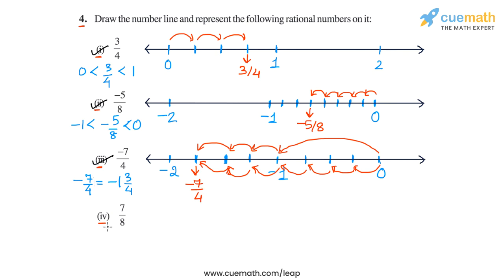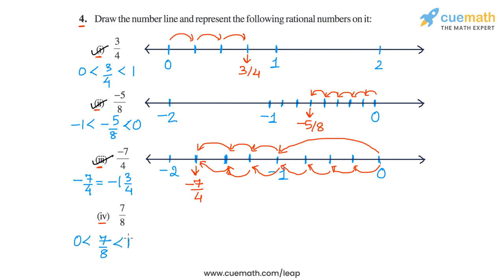Finally, let's come to part 4, in which we have to plot 7 by 8. We note that 7 by 8 is positive and it is less than 1, so 7 by 8 will lie between 0 and 1.